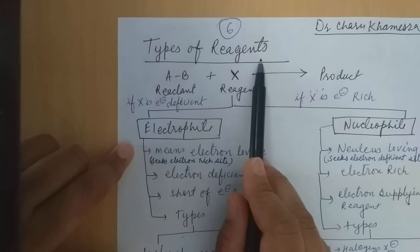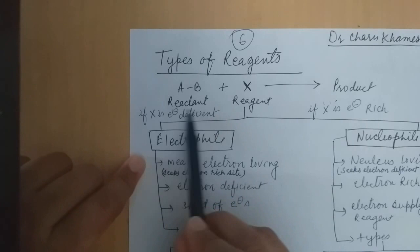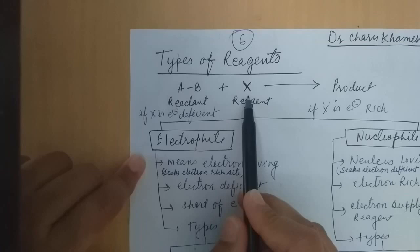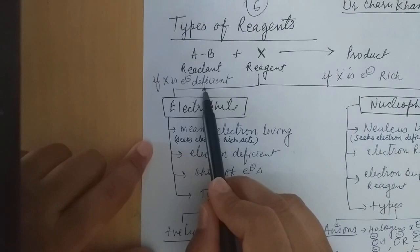Two types of reagents are there. The reactant is a substrate to attack and we have a product formation — that is a common organic reaction. Here, A and B are reactants and this is the reagent. Reagents are two types. It may be electrophilic or it may be nucleophilic. Today, we are talking about these reagents which give the product.